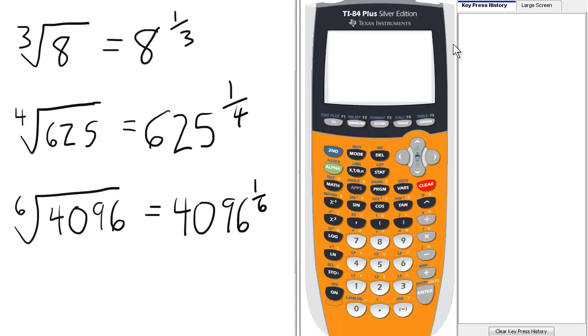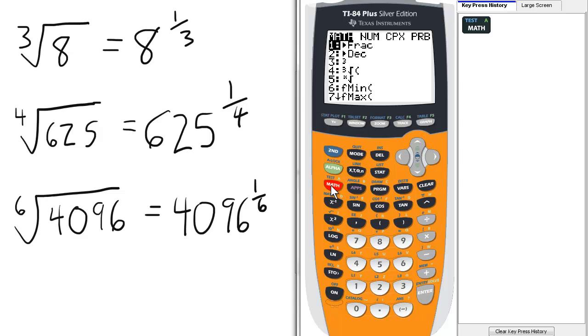Previously we learned to take the cube root of a number by going to the math menu and selecting the fourth option which is the cube root. In this case we enter 8 under the radical for the cube root of 8 and press enter. So the cube root of 8 is 2.